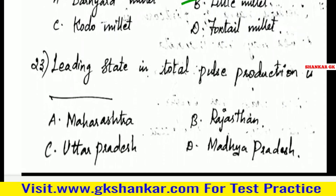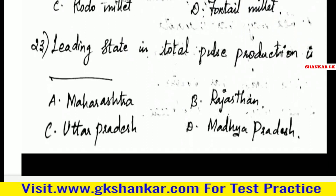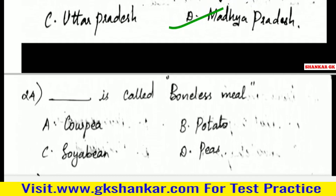Twenty-third question: Leading state in total pulse production is — A. Maharashtra, B. Rajasthan, C. Uttar Pradesh, D. Madhya Pradesh. Answer: D. Madhya Pradesh.